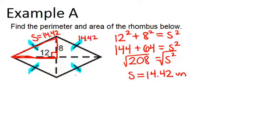If we want to figure out the perimeter, all we need to do is add up all four of the sides, because the perimeter is the distance around a shape.